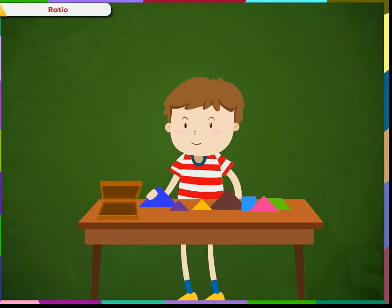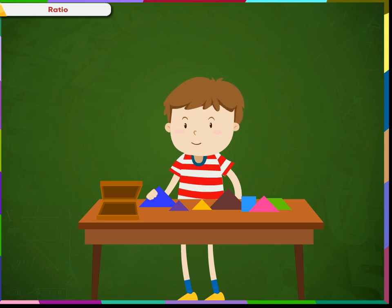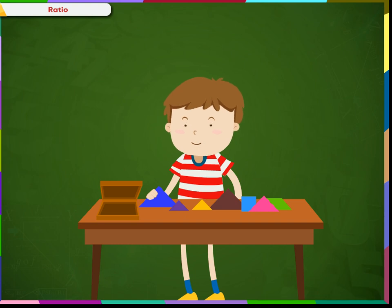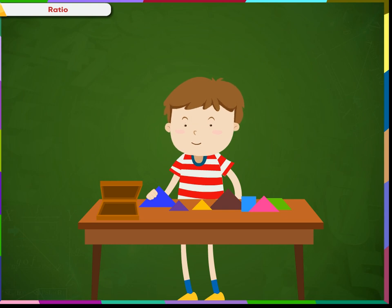Sarthak emptied a box of wooden tangram pieces onto the desk. He counted the number of each shape and compared his findings. He wanted to compare the number of quadrilaterals with the number of triangles.